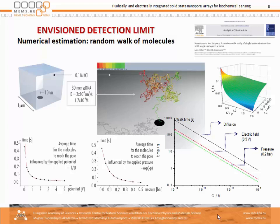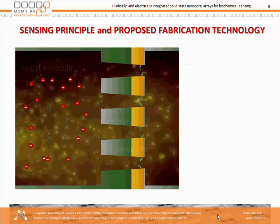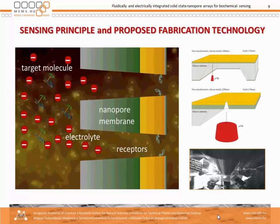If only diffusion was considered, then certain concentrations can be expected over time. Electrical field assistance could enhance the probability of molecules getting through the holes, and pressure increase also helps, so that within a foreseeable time of a few seconds to a few minutes, we could detect molar concentrations theoretically sufficient for diagnosis.